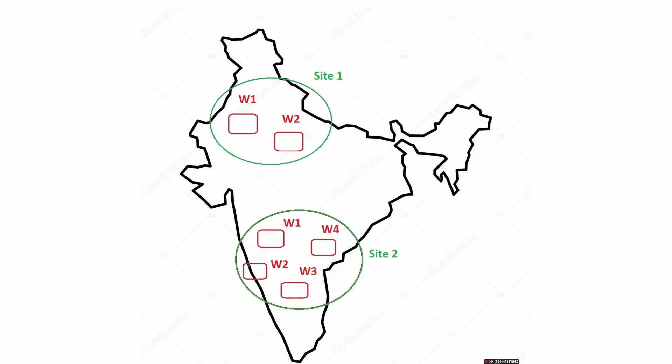In the image, site one has two warehouses W1 and W2, and the second site located on the south side has warehouses W1, W2, W3, and W4. Inside each warehouse we have bins, shelves, and racks. This is a high-level introduction to the site and warehouse hierarchy. Let's move to the system to create a site and warehouse.